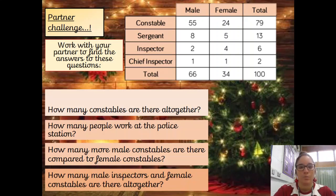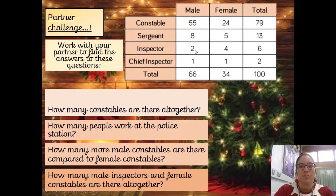You then need to look at how many male inspectors and female constables there are altogether. Find the male inspectors — that's 2 — and the female constables, that's 24. Add the two together: 24 plus 2 equals 26.